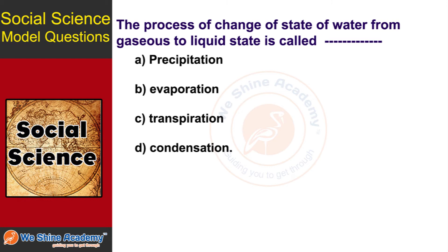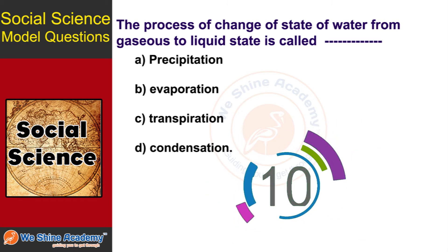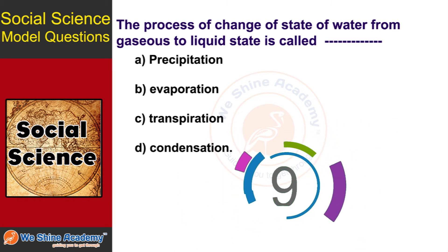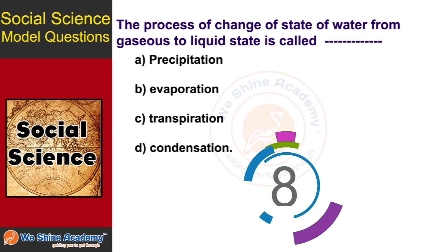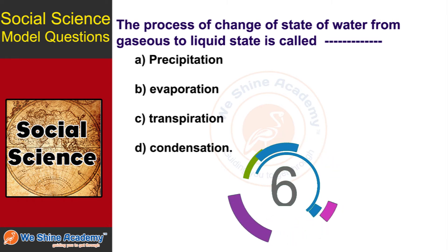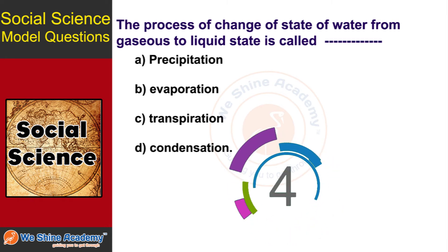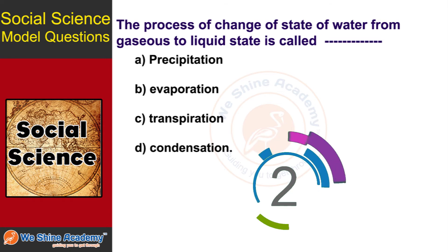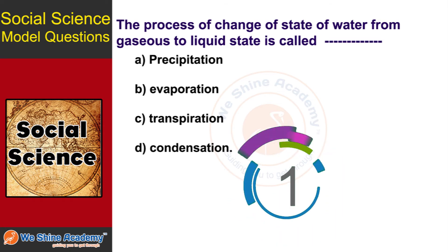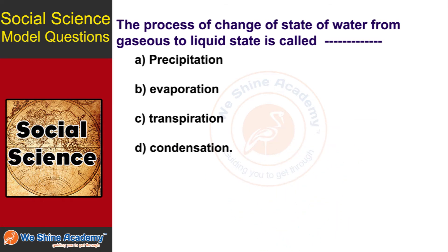The next question is: the process of change of state of water from gaseous to liquid state is called dash. The answer is Option D: Condensation.